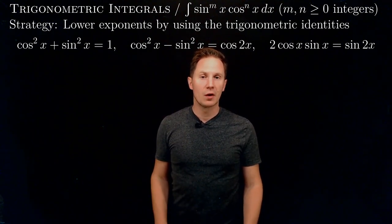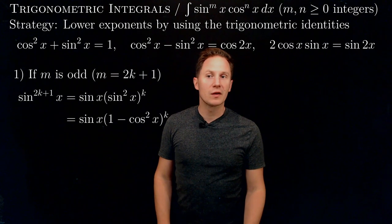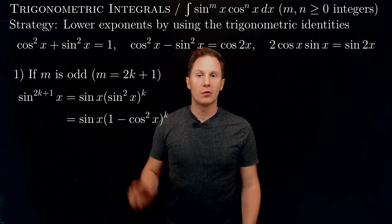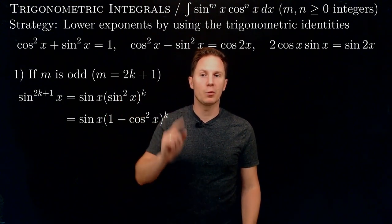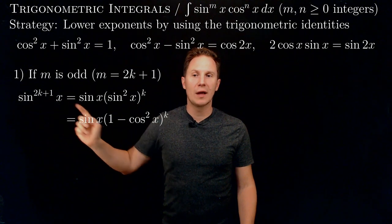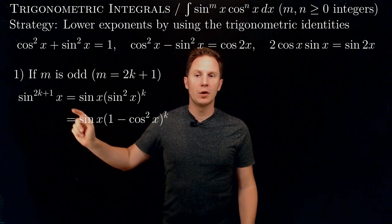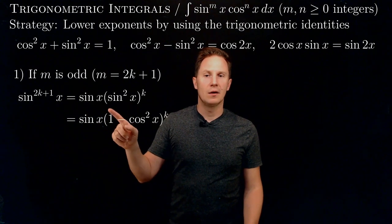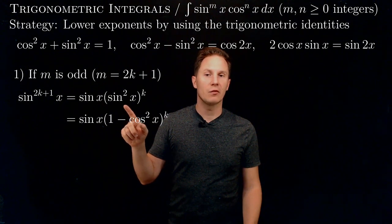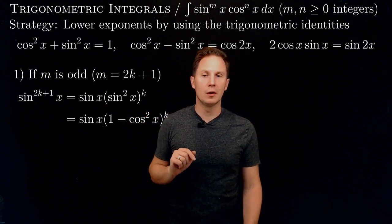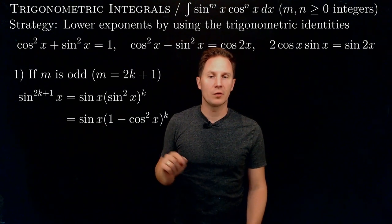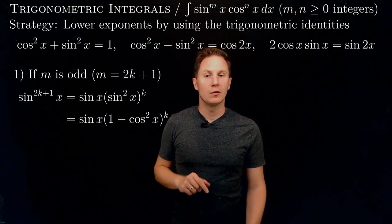We will go case by case. First, we'll consider the case when the exponent of sin(x) is an odd integer, so m is of the form 2k+1. Then sin(x) to the m is sin(x) to the 2k+1. We put one of those sin(x)'s aside and the remaining even power of sin(x) we write as sin squared of x to the k-th power.